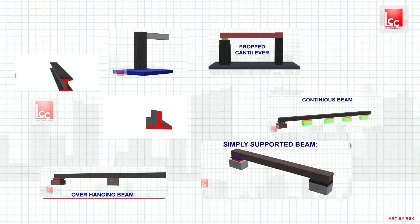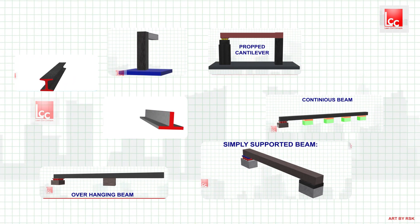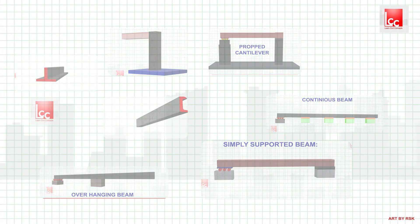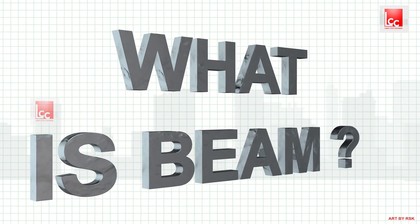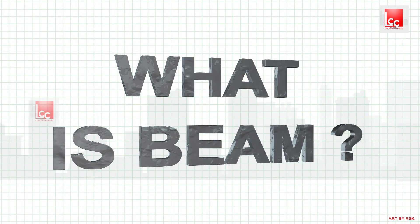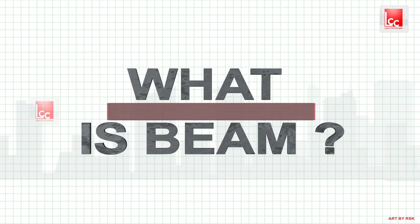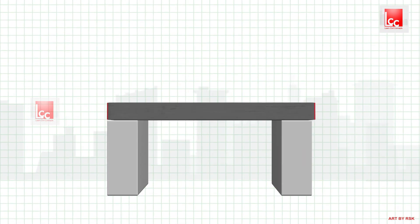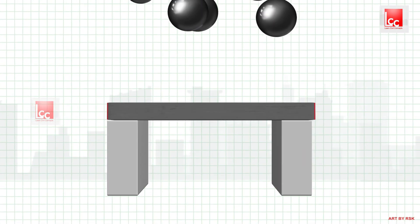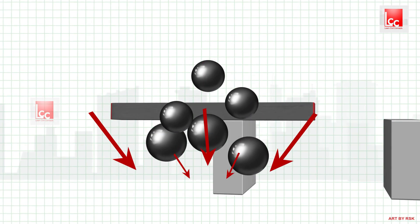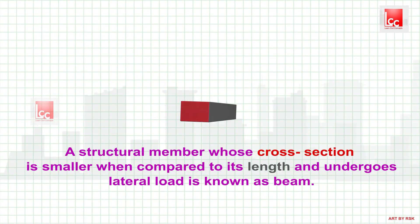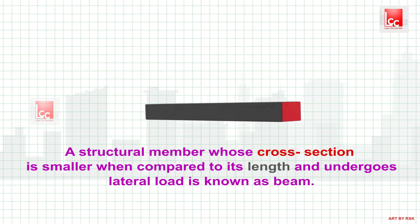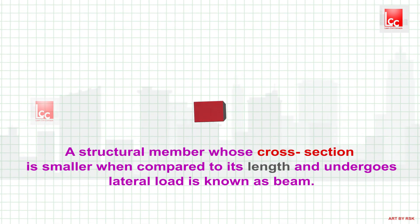Hello friends, welcome to Learn Civil Concept. In this video we will learn about the different types of beams. Before knowing the types of beams, let us first understand what a beam is. Basically, a beam is a horizontal structural member used to carry the load. A structural member whose cross section is smaller when compared to its length and undergoes lateral load is known as a beam.